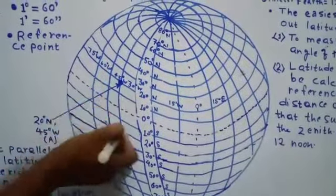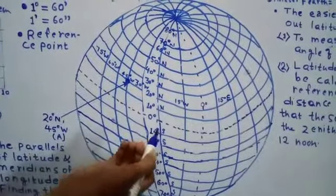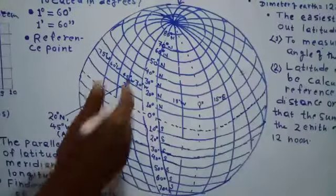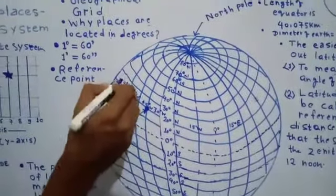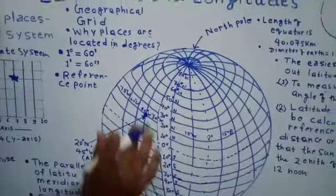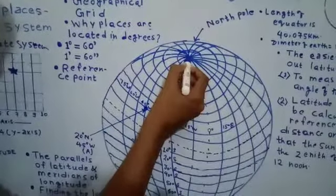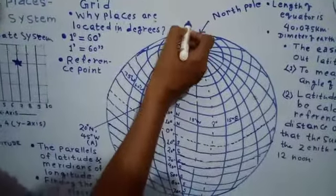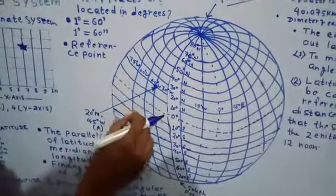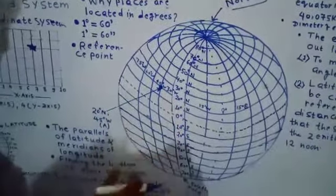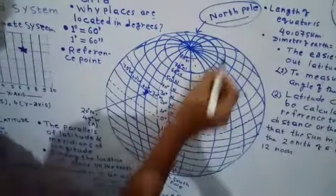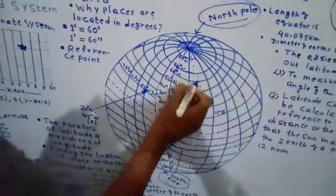The same methods can't be used here because the earth is three-dimensional — it is a sphere. On the sphere, for locating any place on our earth we need two things at the same time: two reference points, which are the poles — the North Pole and the South Pole — and two sets of lines: latitudes and longitudes.